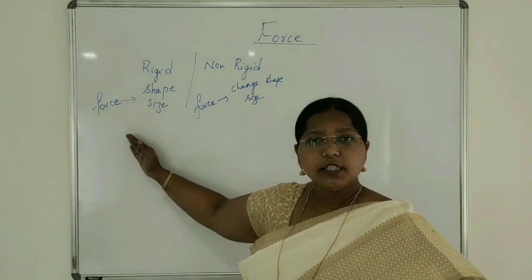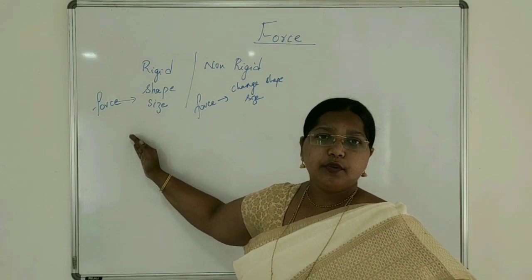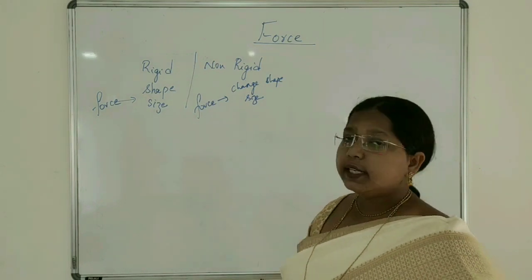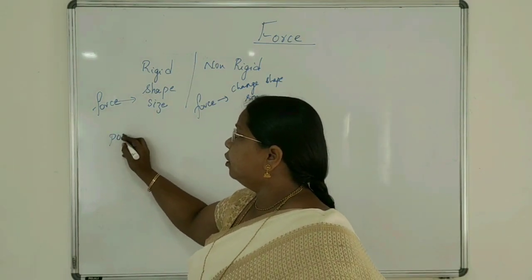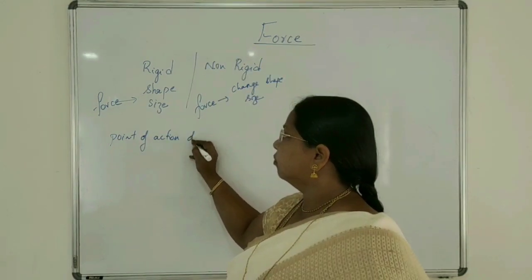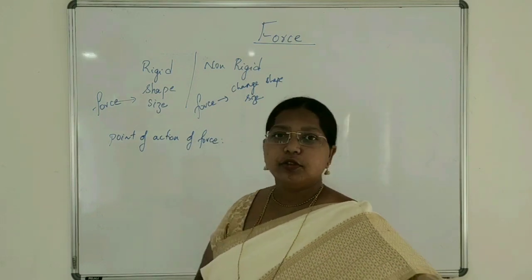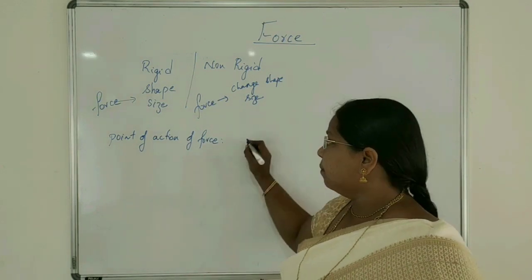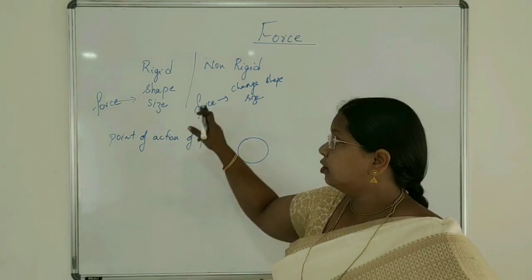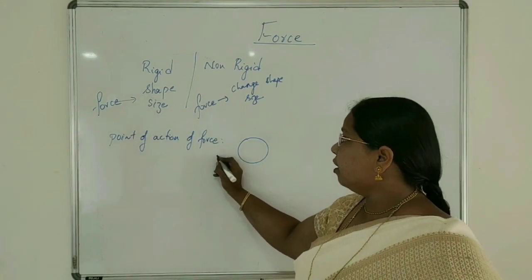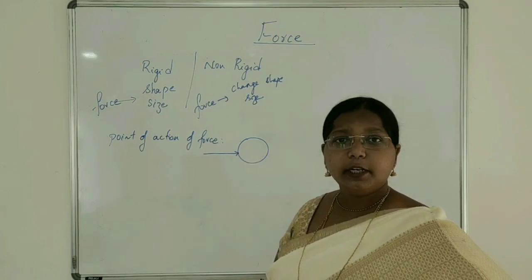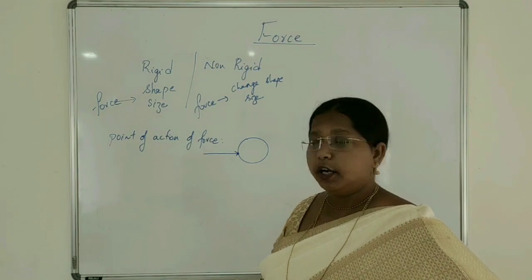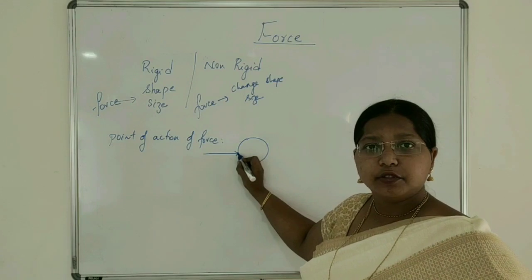A rigid body does not change its shape; it does not deform by the action of any number of forces. A non-rigid body will be deformed by the action of forces. Now, let us see the point of action of force — this is the point where we are applying the force on a rigid body. The point where force is applied on the rigid body is called the point of action of force.